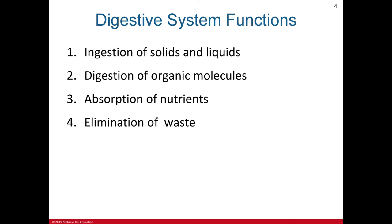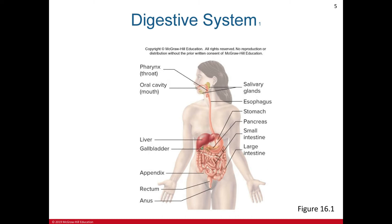Third is absorption of nutrients — the movement of molecules out of the digestive tract and into the blood or lymphatic system. This is the process where we prepare the nutrients from the food we eat to be utilized by our body. Lastly, we have the elimination of waste — the removal of undigested materials such as fiber, plus other waste products from the body, also called feces.